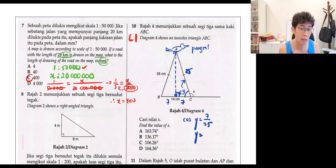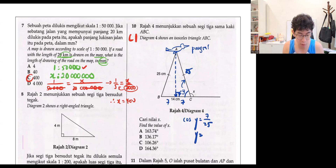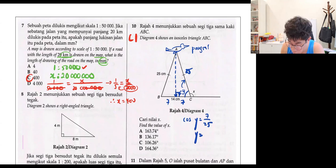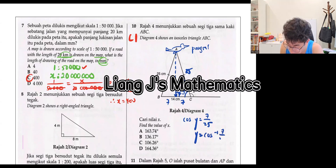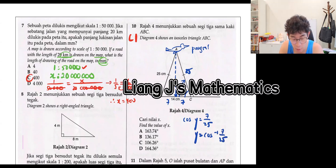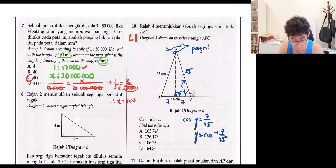To solve the angle, you need to place negative 1. So what you're going to type in your calculator: you're going to type shift cos, 7 over 25. Shift cos — cos negative 1.